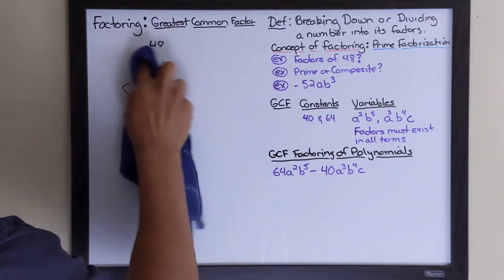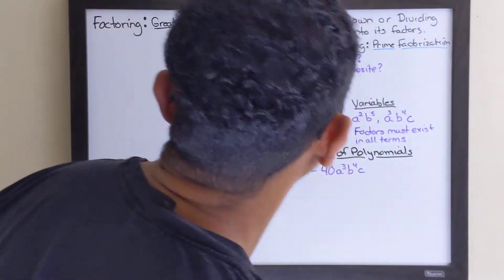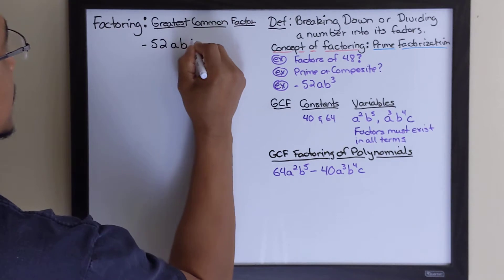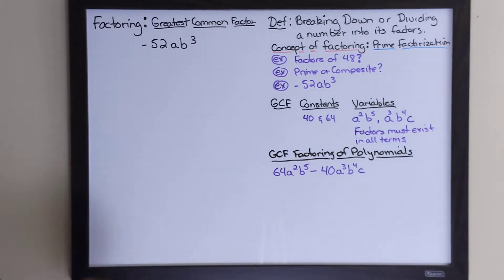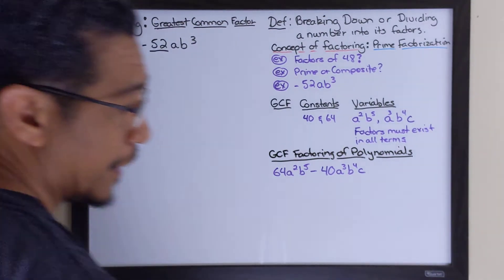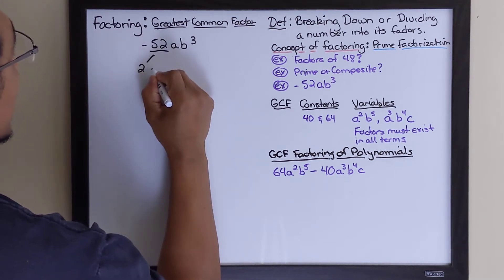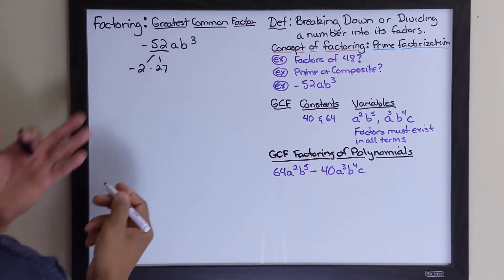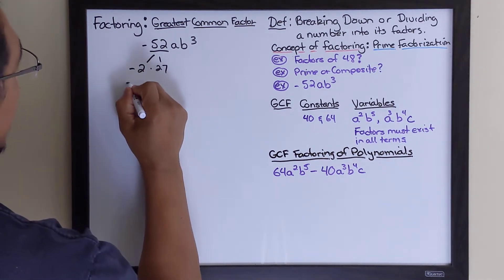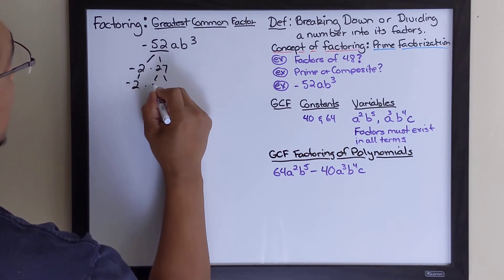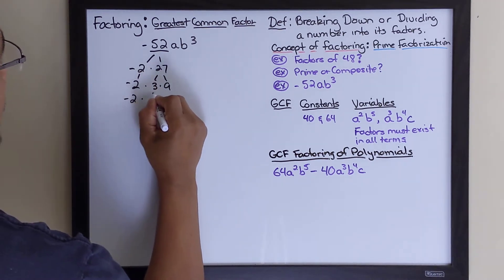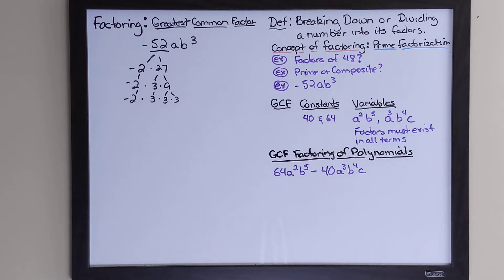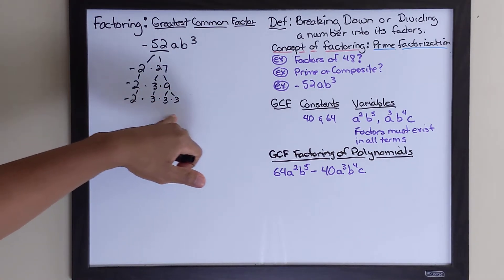Let's look at another example of prime factorization before we move on to the greatest common factor. Take the term negative 52ab³. Let's break down the number first: 52 breaks into 2 and 26 — we make one factor negative to account for the negative sign, so negative 2. Then 26 is 2 times 13. That gives us the prime factorization of negative 52.